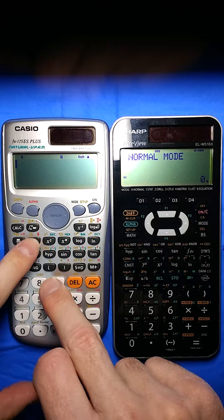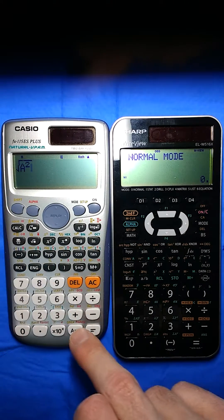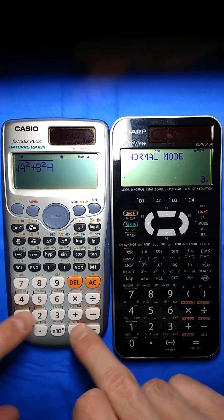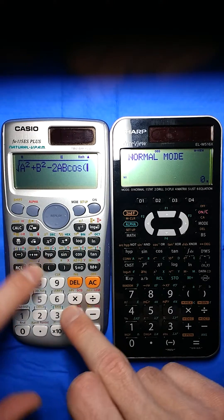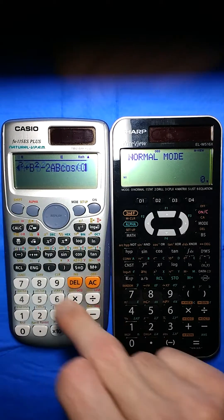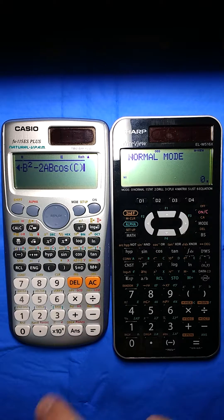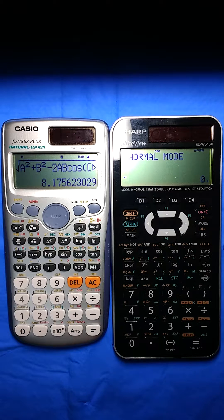So on the Casio, I'm going to put it in here. Don't have any way to do lowercase. A squared plus b squared minus 2ab cosine c. These guys are tolerant of not putting in times and all that good stuff. I'm going to enter that. I'm going to hit equal. And it comes up with a value because there's a, b, and c values already in this calculator.